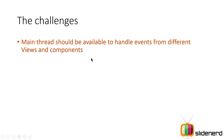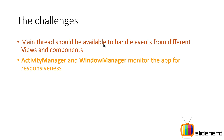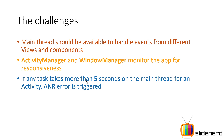The main thread should be available for doing UI-related stuff. If you're downloading an image on the main thread, that's not fair because the main thread then cannot handle button clicks or any other UI events. ActivityManager and WindowManager scan your app for responsiveness, so if anything takes more than five seconds on the main thread, an ANR error is triggered.